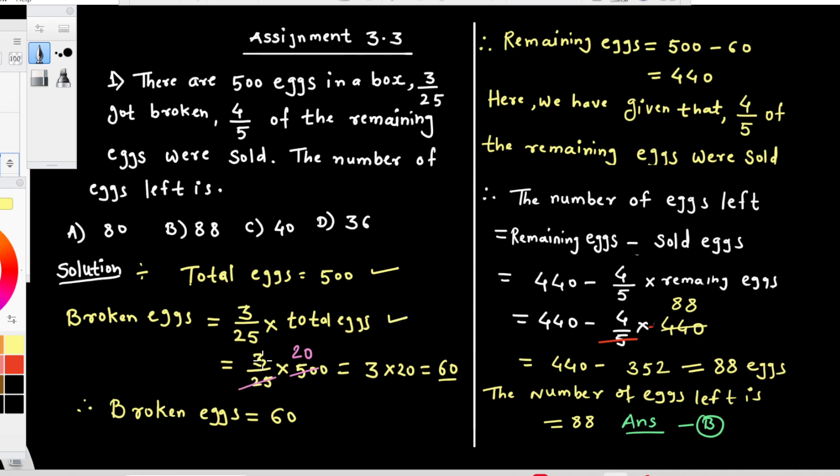Therefore, 3/25 multiplied by 500. 500 divided by 25 is 20, then 3 into 20, we get 60. Therefore, broken eggs is equal to 60.